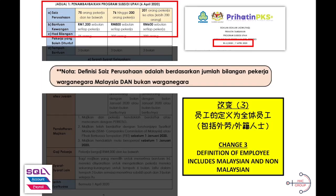Key changes number three. When you calculate the number of employees — 75 up to 200 and above — you have to include the number of foreign workers as well. But it doesn't mean that these foreign workers can claim WSP. The general idea is to add them in to determine the size of the business.